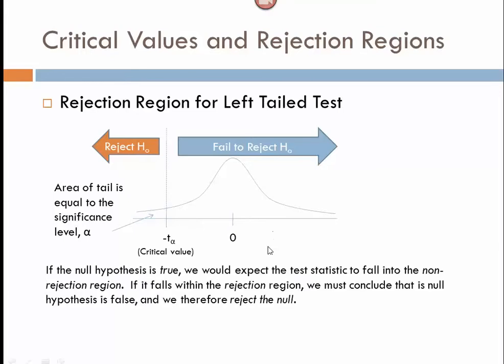So, the basic idea is if my null is true, then my value should fall over here somewhere. And if it doesn't, if it falls into the extreme area of the curve, then we must assume that the null hypothesis is false. Therefore, we reject it in favor of the alternative.